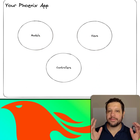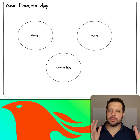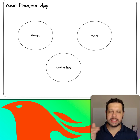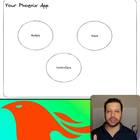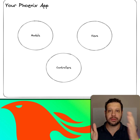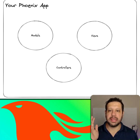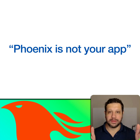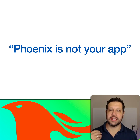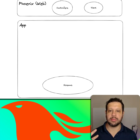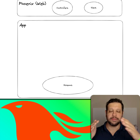Phoenix apps prior to version 1.3 were very MVC in the Rails way - you had models, views, and controllers, and your directory structure reflected that. Then Phoenix 1.3 came along with the idea that 'Phoenix is not your app,' and they separated the web layer.